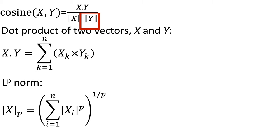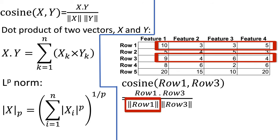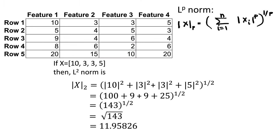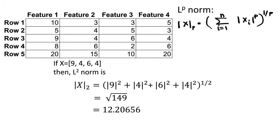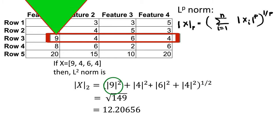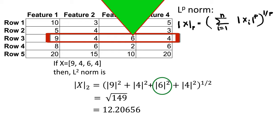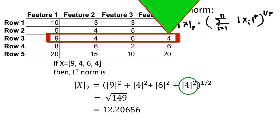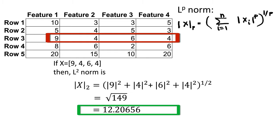If we want to compute the cosine similarity between row 1 and row 3, we need the L2 norm of row 1, which we have already computed. Now we have to compute the L2 norm of row 3. Row 3 contains [9, 4, 6, 4]. The L2 norm of row 3 is the square root of |9|^2 + |4|^2 + |6|^2 + |4|^2, which results in the square root of 149.